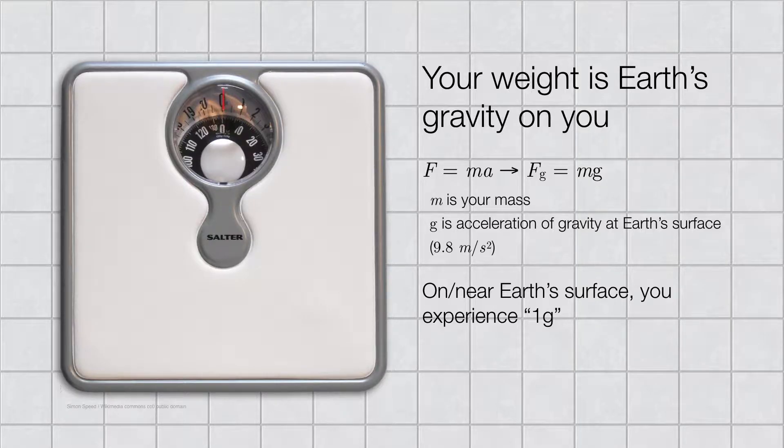But that means that what we refer to as weight is really just a measure of the Earth's gravitational force on you. And in all fairness, your gravitational force on the Earth. So we often replace the acceleration in Newton's second law with the acceleration due to gravity. It's always going to be close to 10 meters per second squared anytime you're near the surface of the Earth. So that's why we say that if you're standing on the surface of Earth, you are experiencing one G worth of gravity.